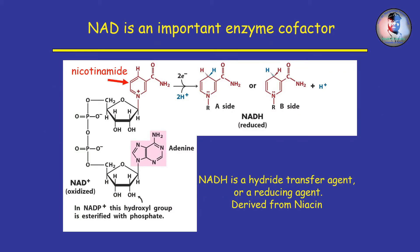Nicotinamide adenine dinucleotide, NAD, is a coenzyme central to metabolism. Found in all living cells, NAD is called a dinucleotide because it consists of two nucleotides joined through their phosphate groups. One nucleotide contains an adenine nucleobase and the other nucleotide contains nicotinamide.